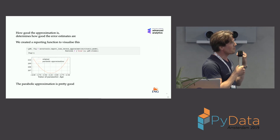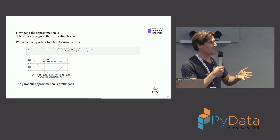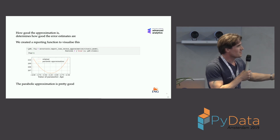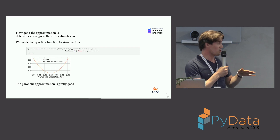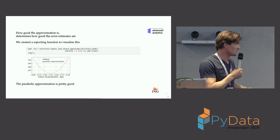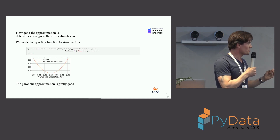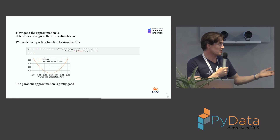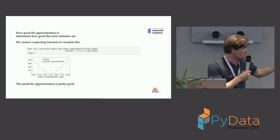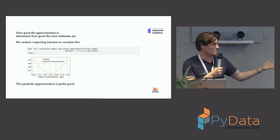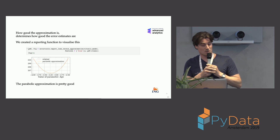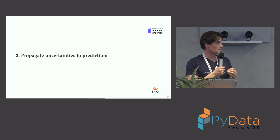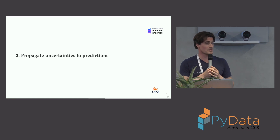We make an approximation of our loss function to determine uncertainties on our parameters, so how good the approximation is determines how good our uncertainty estimates are. For this we've also made a reporting function to visualize this. In this example you can see that the parabolic approximation and the original are very close — it's a good approximation, which means it's fairly okay to trust your uncertainty estimates.